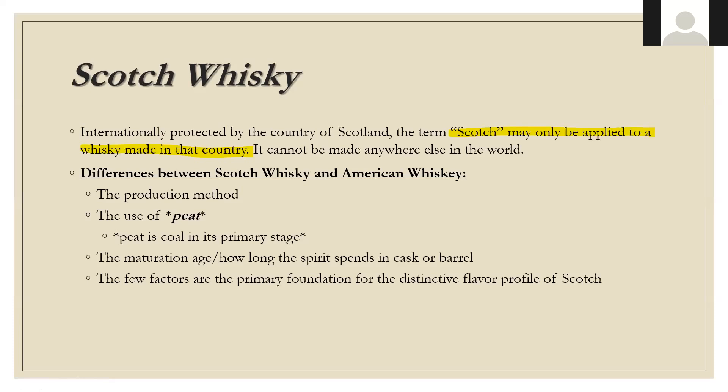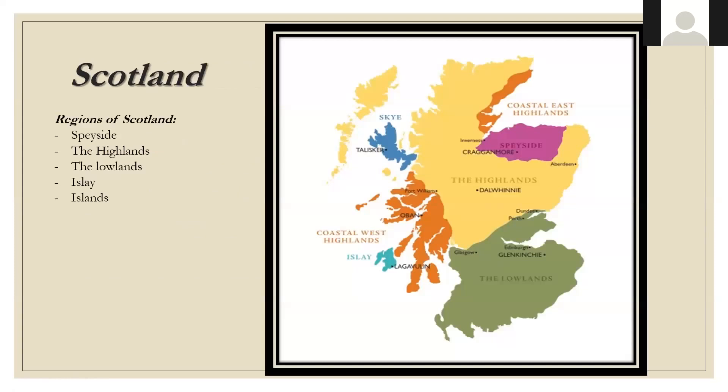Peat was utilized in Scotland because it's prevalent everywhere in the marshlands. In areas like the islands that had difficulty getting lumber shipped in, they had to use what they had — peat. That's why you see in places like Islay and Orkney a heavier dose of peat influence on the spirit. The maturation — how long the spirit spends in the cask and what those casks were previously used for — along with peat are the primary foundations for Scotch's distinctive flavor.